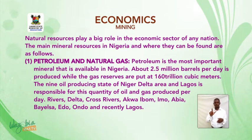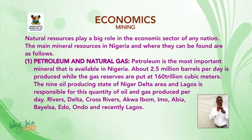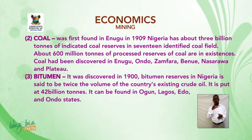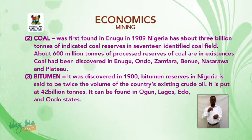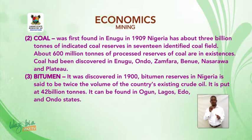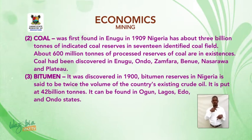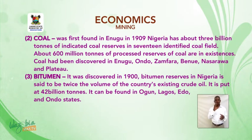These states include Rivers, Delta, Cross Rivers, Akwa Ibom, Imo, Abia, Bayelsa, Edo, Ondo and recently Lagos state. Coal — coal was first found in Enugu in 1909. Nigeria has about 3 billion tons of indicated coal reserves in 17 identified coal fields. About 600 million tons of processed reserves of coal are in existence.